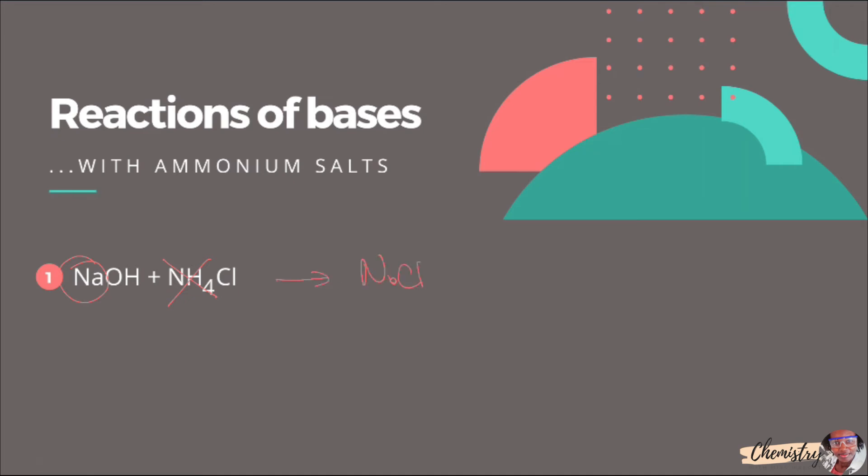The other products of a reaction between a base and an ammonium salt are ammonia and water. The reaction between a base and an ammonium salt gives us a salt, ammonia, and water. Let's do a second example.